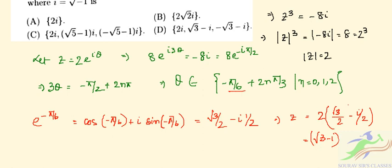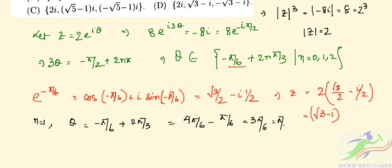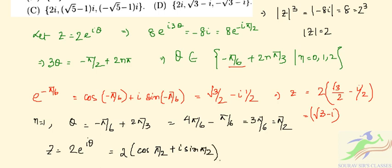From this we can see that option D is correct. For n = 1: θ = -π/6 + 2π/3 = π/2. So z = 2(cos(π/2) + i·sin(π/2)) = 2(0 + i) = 2i.